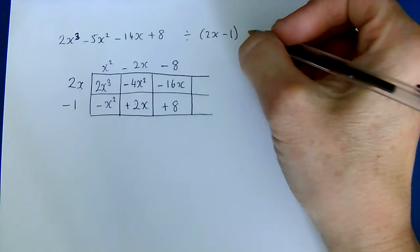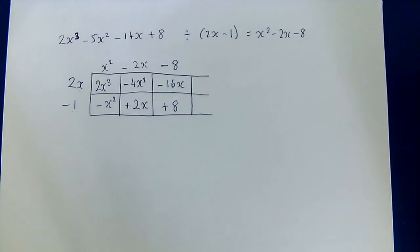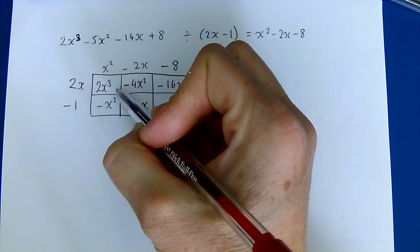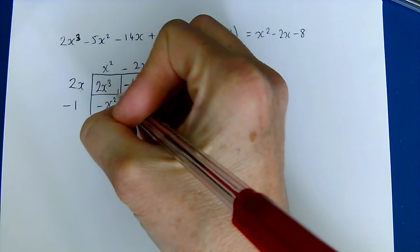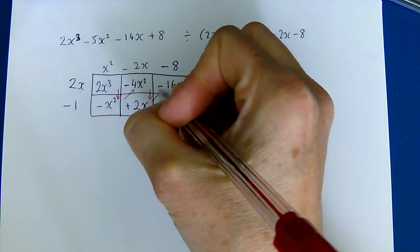So the answer to this is x squared minus 2x minus 8. We followed a little pattern. We start off with the first term with the highest power here and then we fill in the boxes in this sort of order.